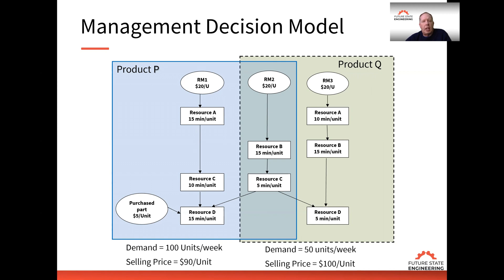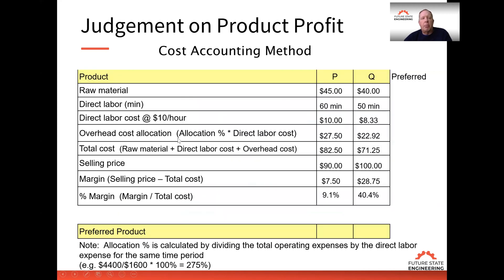If we take this model and look at each product in isolation — such as calculating profit margin — we can use a cost accounting method for determining margin on each product. Taking product P and product Q through the calculation, you can see that the margin on product P is only 9.1% where the margin on product Q is much higher at 40.4%, so our preferred product is product Q.